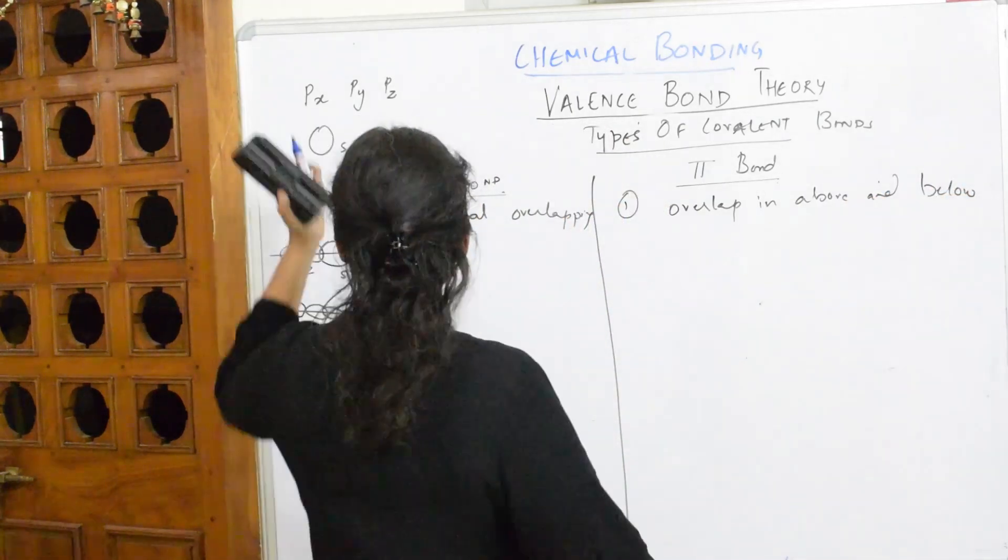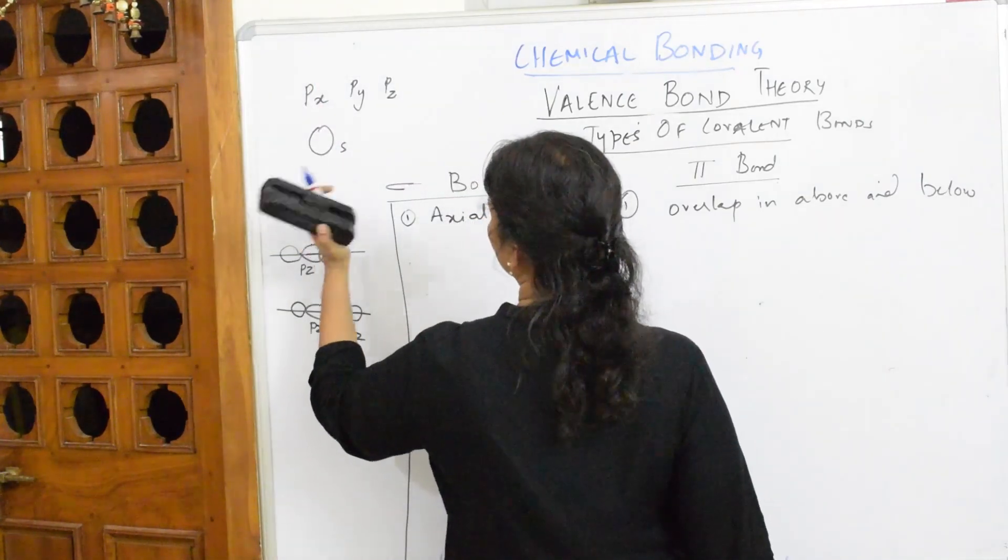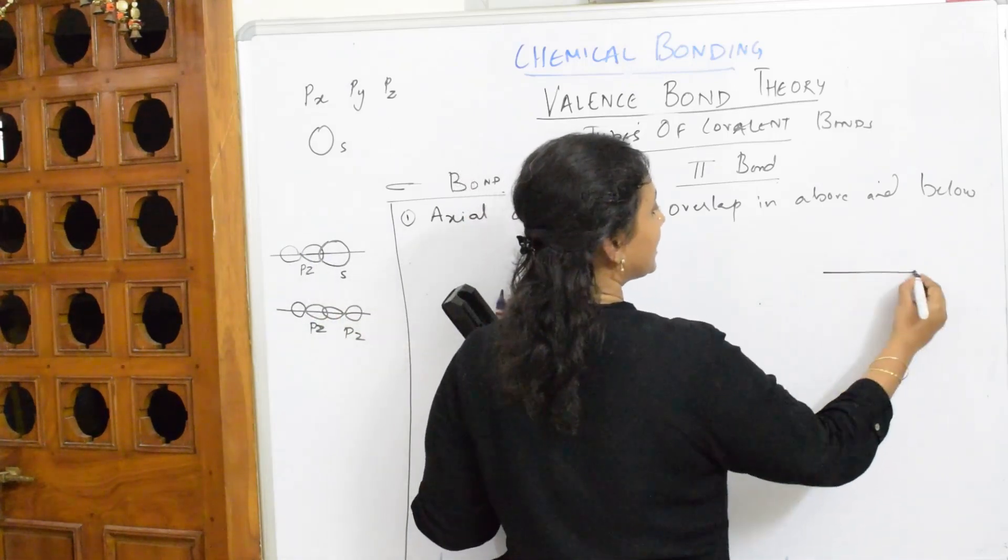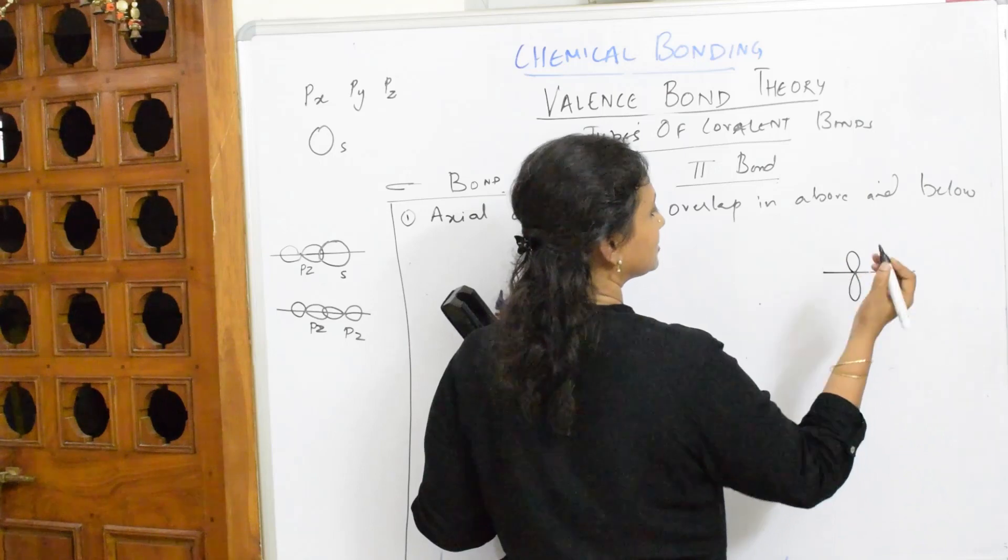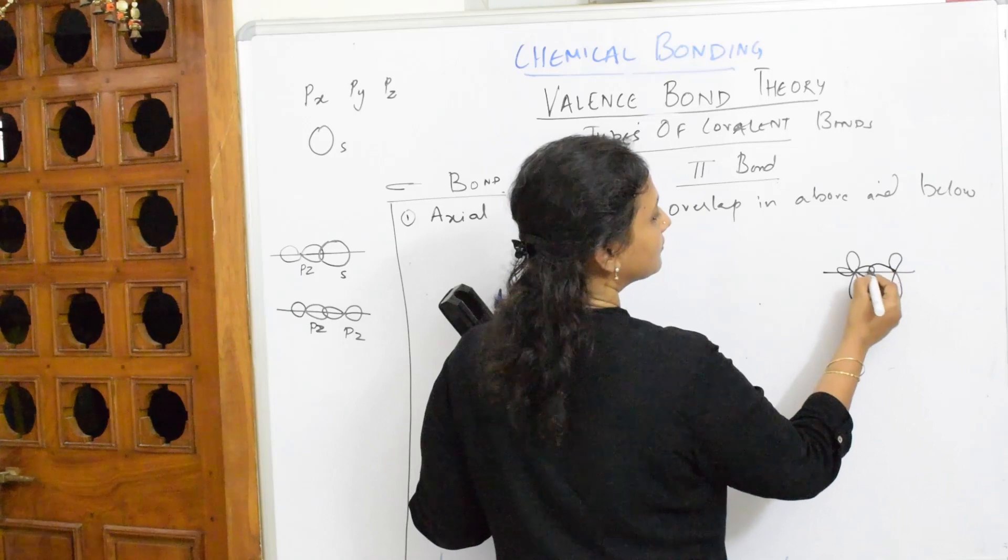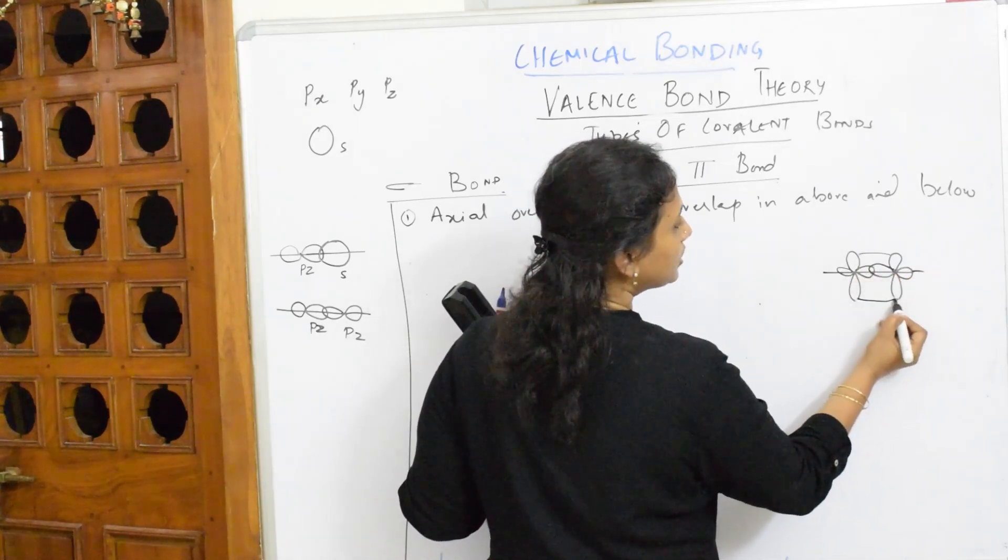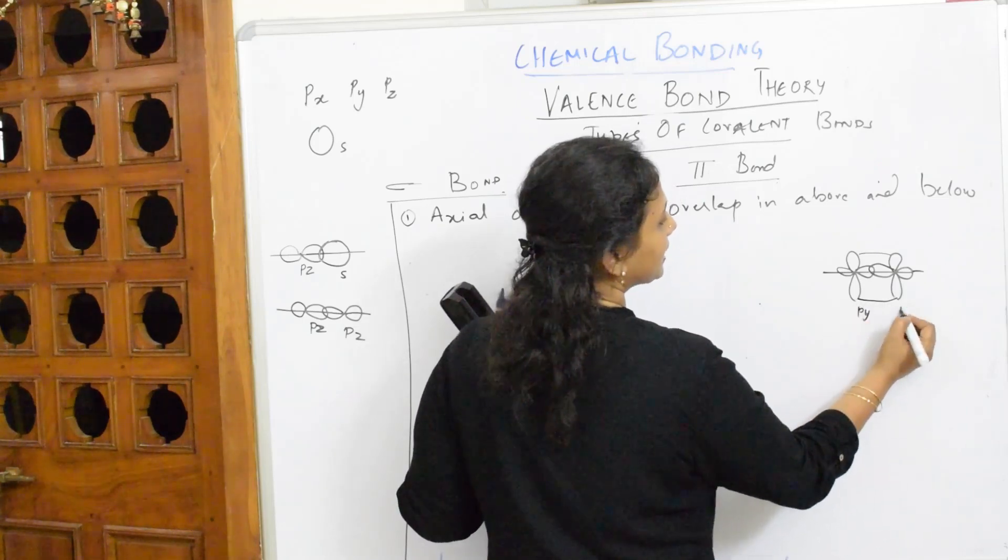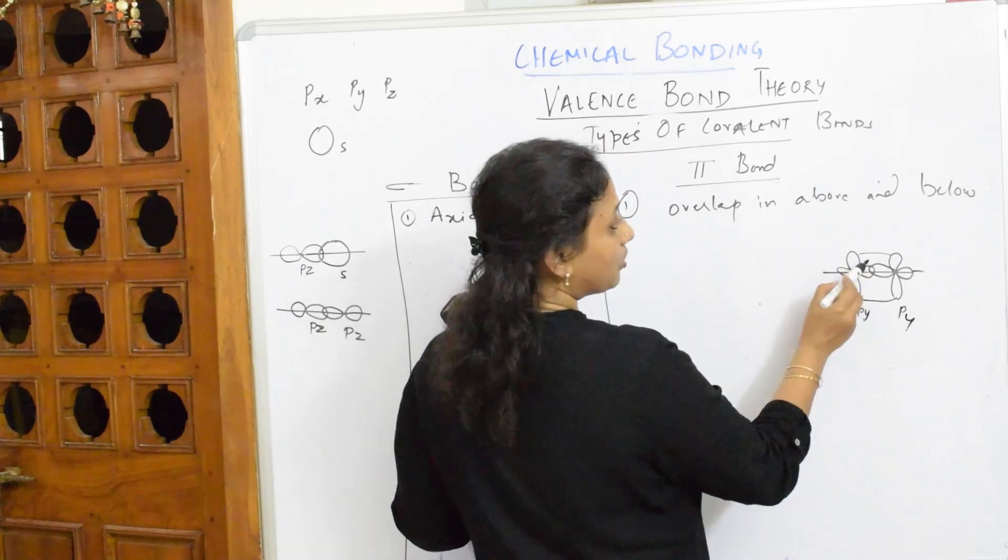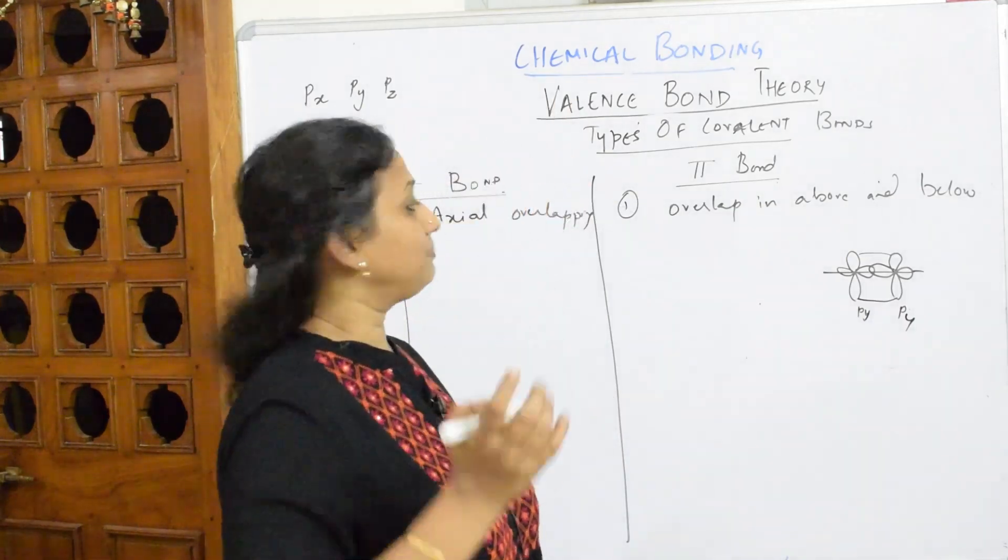What do I mean by this? I have taken combinations of px and px. You can also pick up px and px or pz and pz. If I have like this, I have two more lobes here. I have one more lobe here. The bond formed above and below the sigma bonds are called pi bonds. Above and below. Here it is axial in nature.